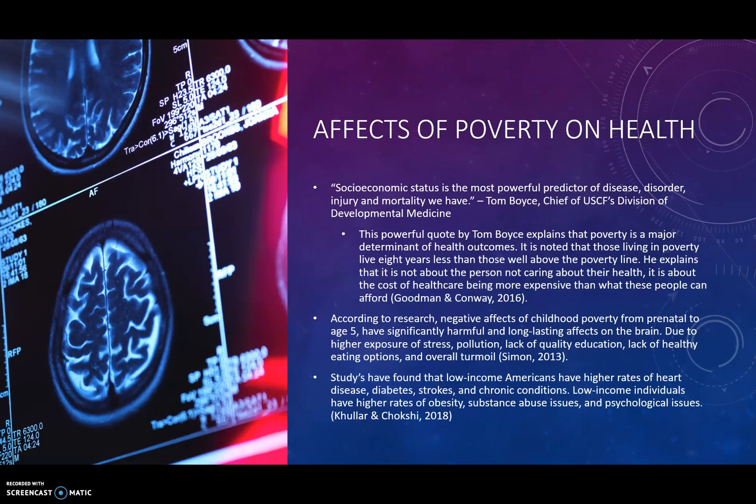So the effects of poverty on health — this is where I began my research. 'Socioeconomic status is the most powerful predictor of disease, disorder, injury, and mortality that we have.' That's a quote from Tom Boyce, the chief of UCSF's Division of Developmental Medicine. This powerful quote explains that poverty is a major determinant of health outcomes. It is noted that people living in poverty live 8 years less than those living well above the poverty line. He explains that it is not about the person not caring about their health, but about the cost of health care being more expensive than what these people can afford.